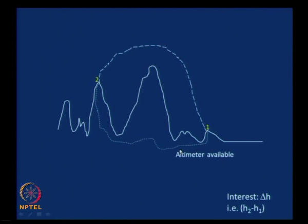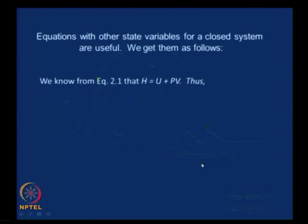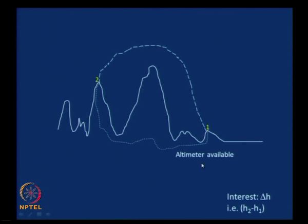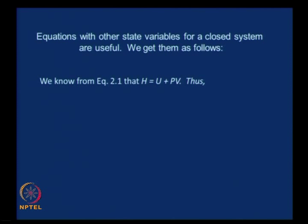The route where the altimeter was available gave us a means of measuring. Similarly, in thermodynamics we would have various paths between two states, and one of those paths would have some easy way of measuring the state variable values at those two points. We then started looking at useful thermodynamic equations for a closed system, which we will continue with in this class.